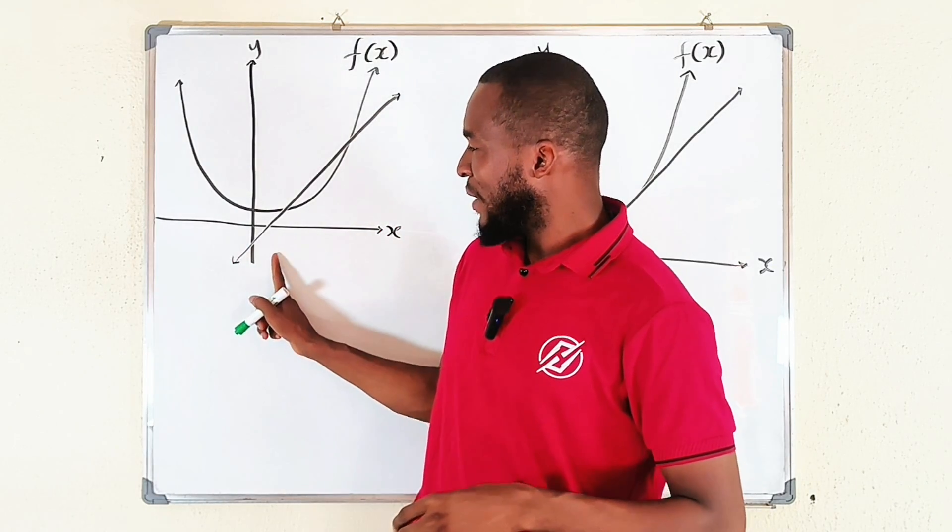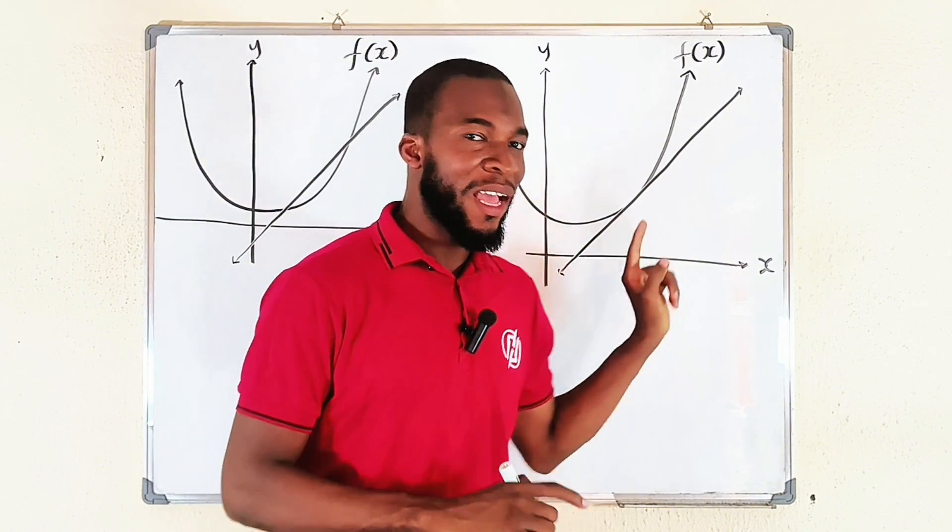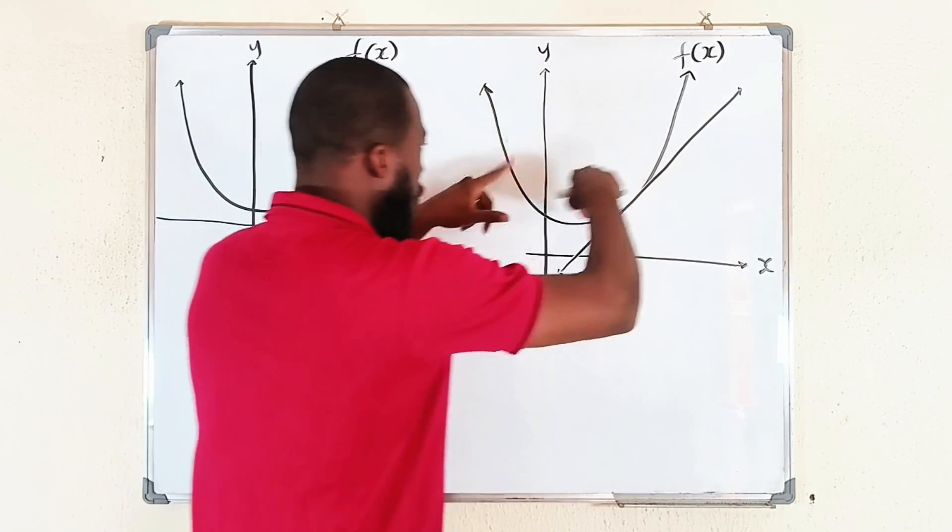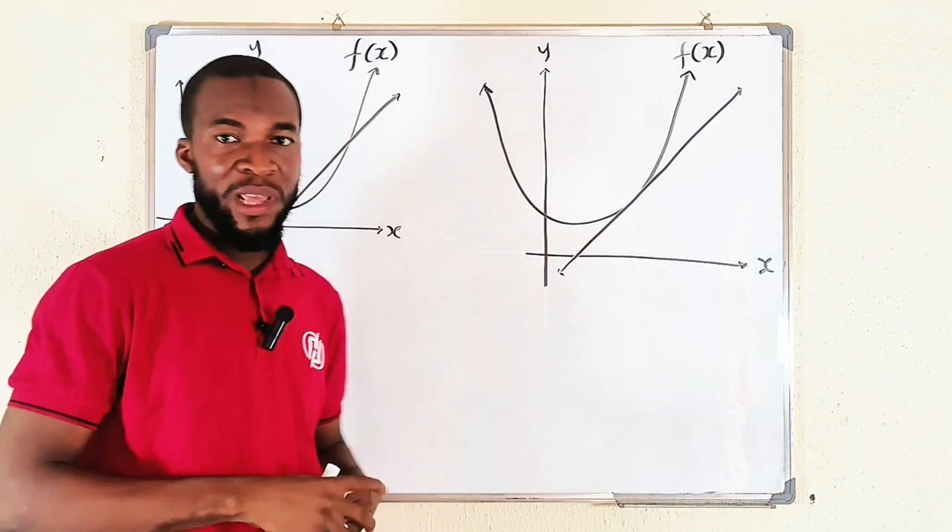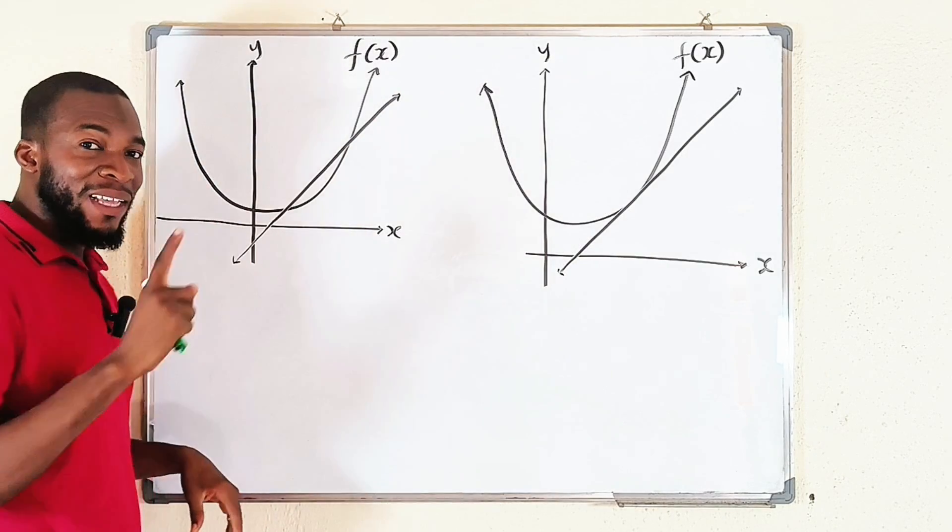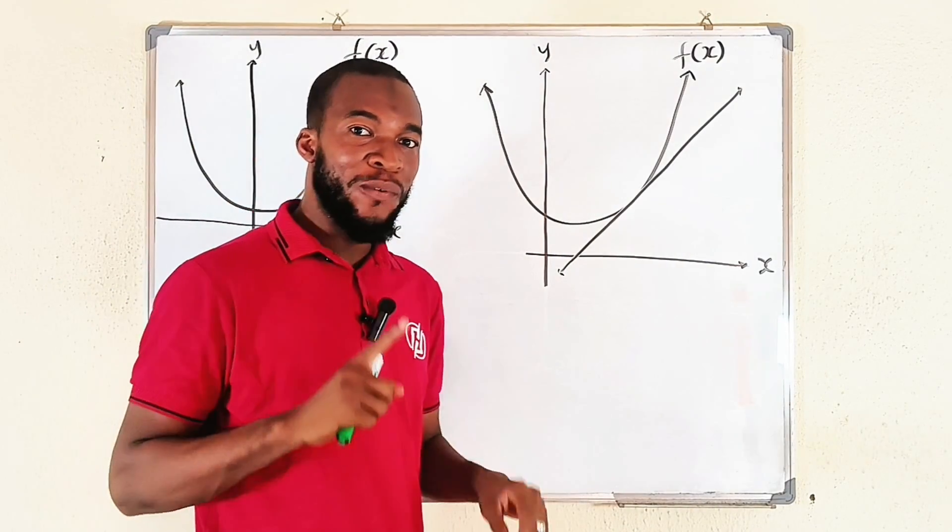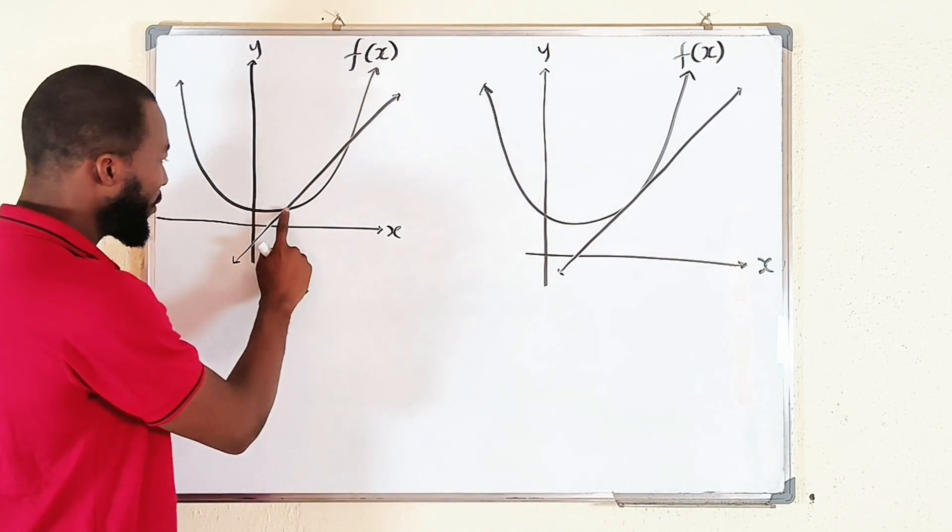We have a secant line here, we have a tangent line here, and you can see we have two curves of an arbitrary function f(x). A secant line passes through the curve at exactly two points, you see, one, two.